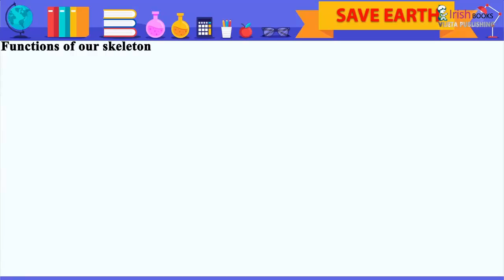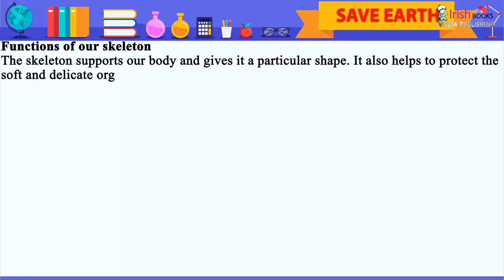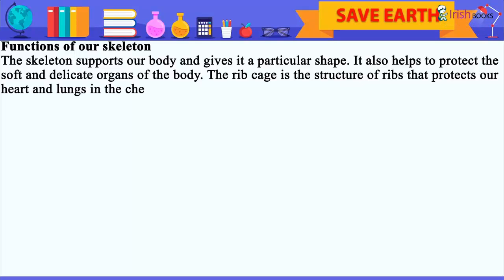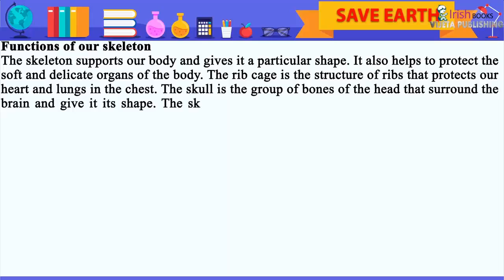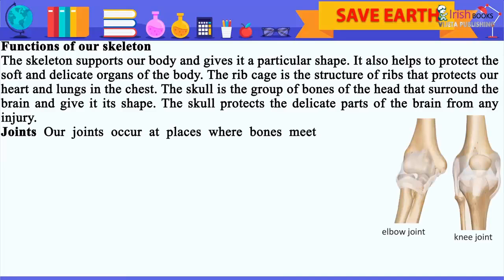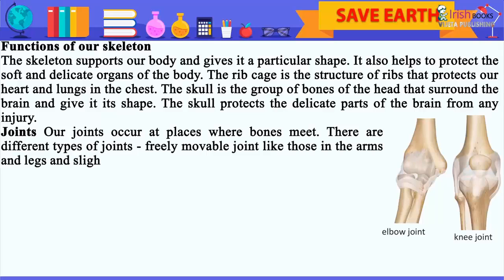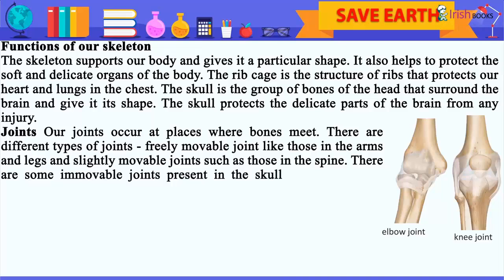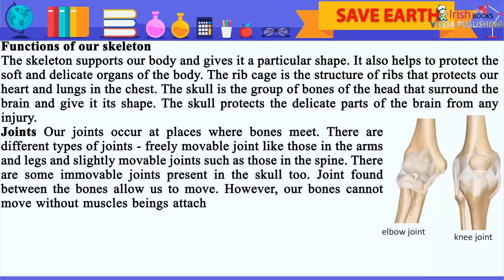The skeleton supports our body and gives it a particular shape. It also helps to protect the soft and delicate organs of the body. The rib cage is the structure of ribs that protects our heart and lungs in the chest. The skull is the group of bones of the head that surround the brain and give it its shape. The skull protects the delicate parts of the brain from any injury. Our joints occur at places where bones meet. There are different types of joints: freely movable joints like those in the arms and legs, slightly movable joints such as those in the spine, and some immovable joints present in the skull.